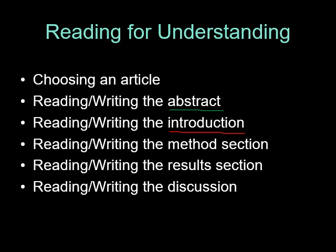The method section is something that is very, very detailed. A good method section means a reader should be able to read it and reproduce the entire study — it should be that detailed. The results section tells the reader what the actual findings of the experiment or study are that came out from the methods.